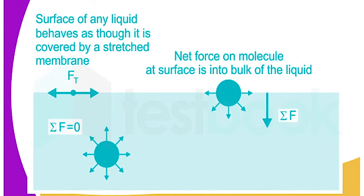We have surface tension. Sometimes the surface of water behaves like a blanket — you can put a nail on top of water and it floats. This is because of surface tension.